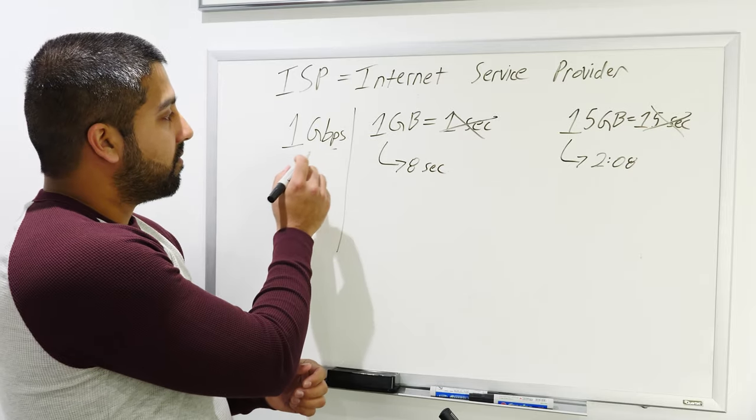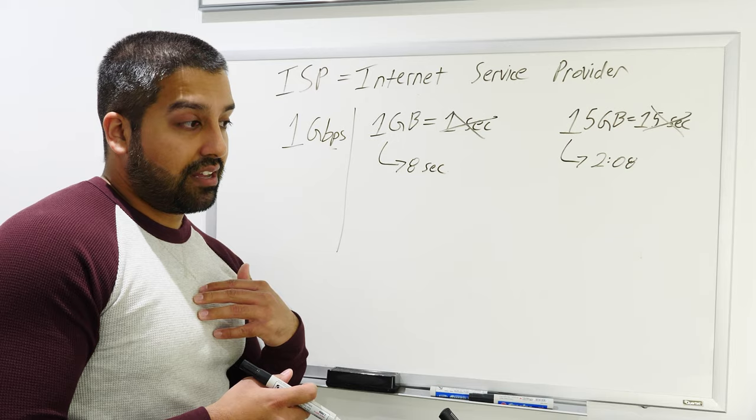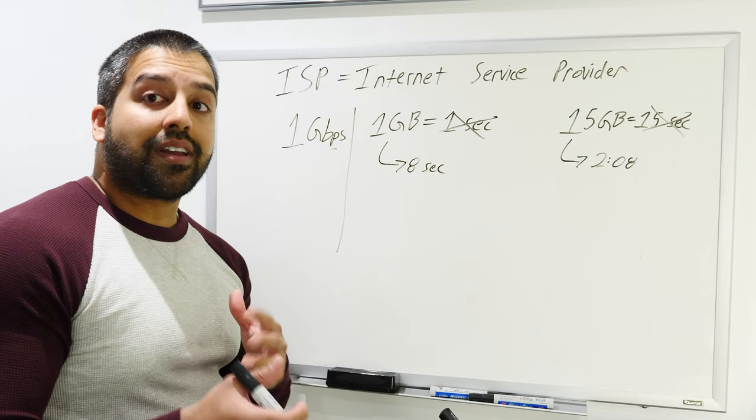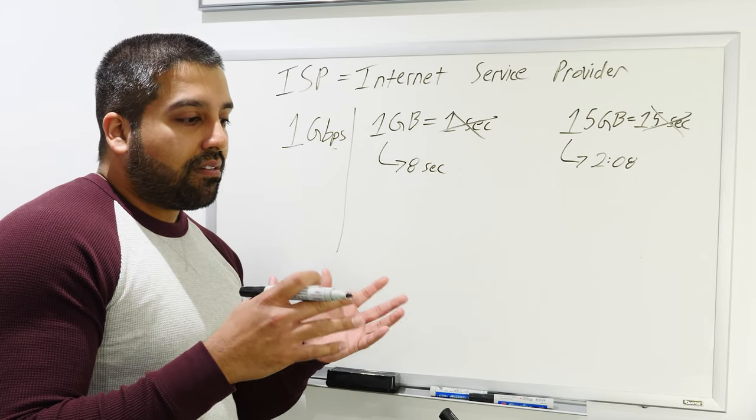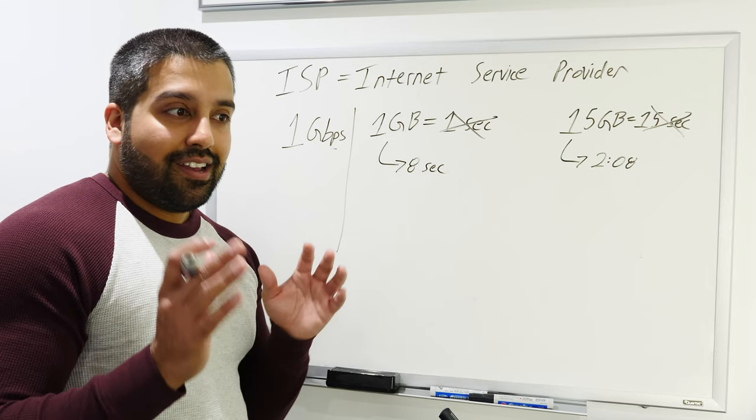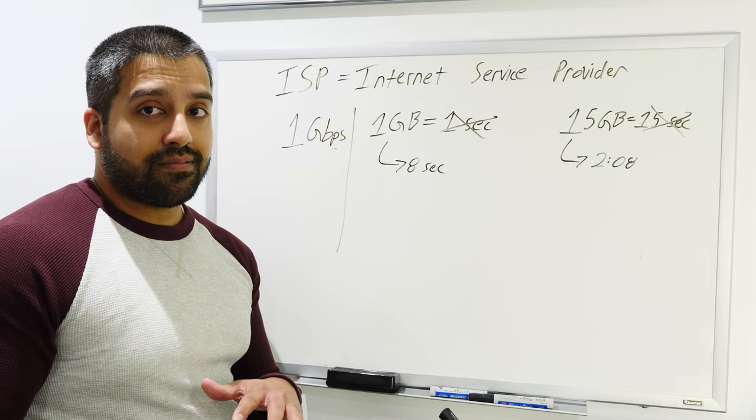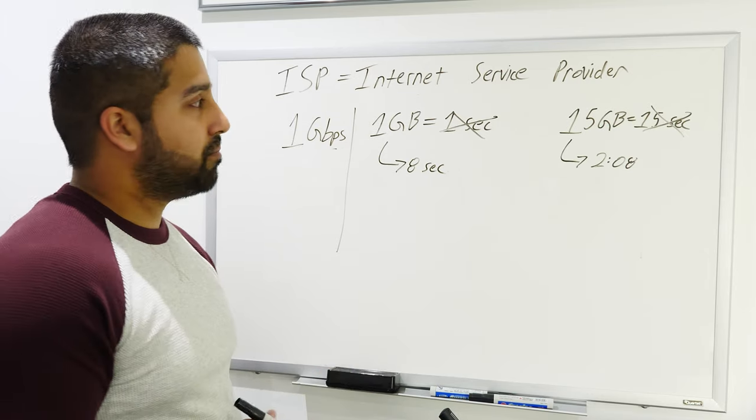That video explains how the internet technologies work, the good and bad of each one, and the theoretical speed you would get. So the reason I say that, and it's important for this video too, for example, I have 150 megabits download speed in my house over cable internet. I will probably never ever see that speed or achieve it. In fact, at certain times of the day, it'll go reduced to half that speed for cable internet.